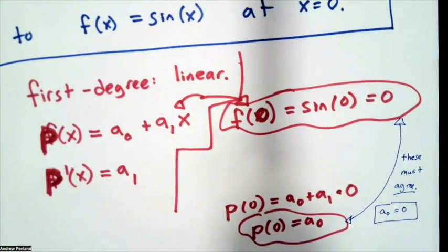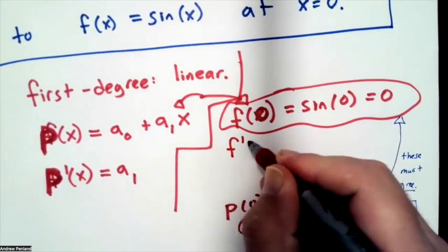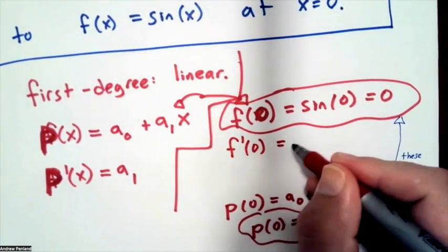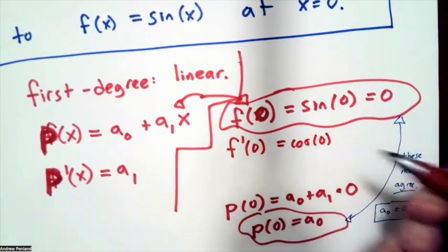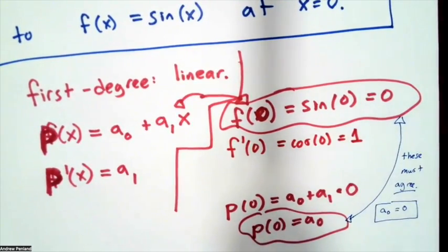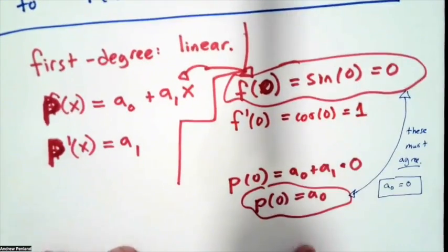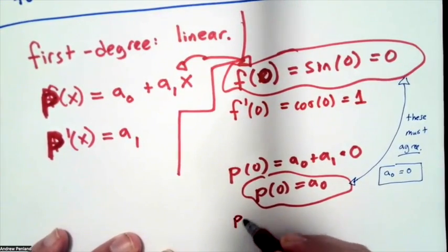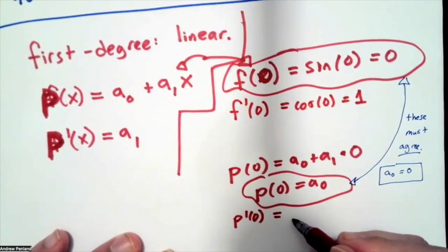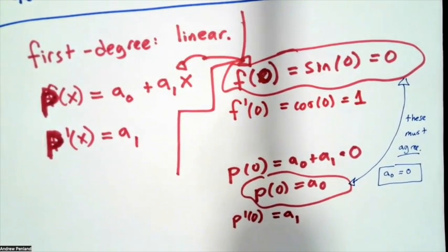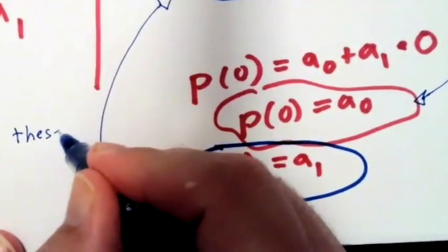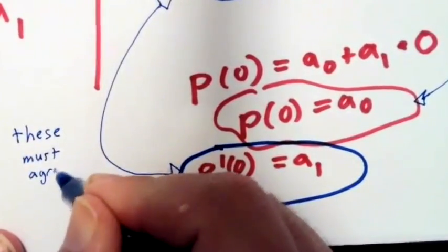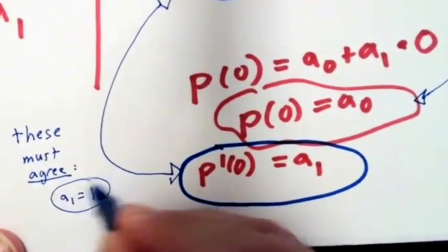And then on the other hand, how do I figure out this a sub one? Well, f prime of zero, since f of x is sine, will be cosine of zero, so f prime of zero is one. Then I look at p prime of zero, which will just be a sub one. So again, I have to match these coefficients up, and what I get is that a sub one has to be equal to one.